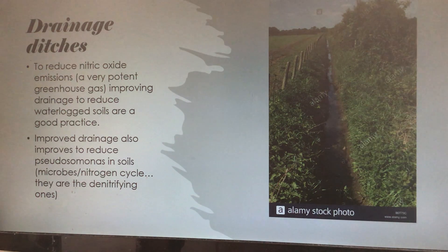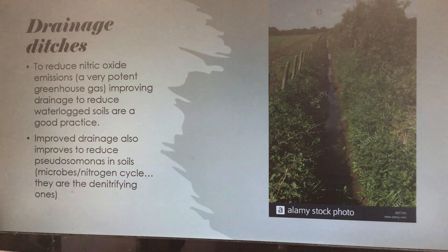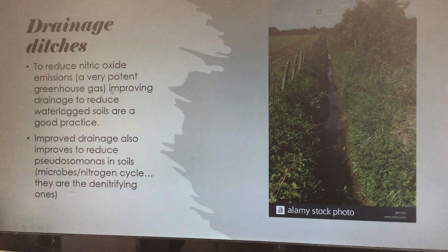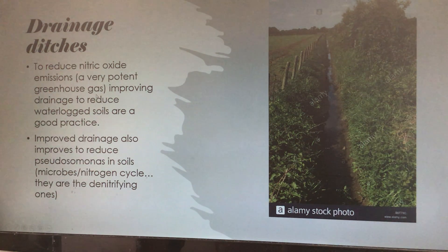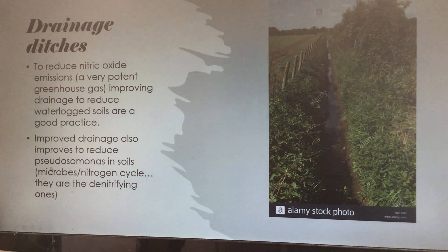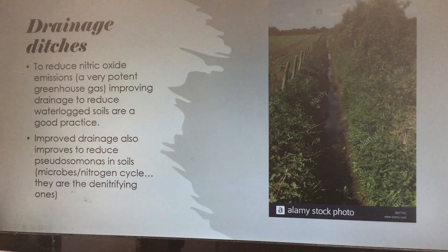Drainage ditches have a double effect. On one side, nitrogen oxides being emitted from waterlogged stagnant soil are very potent greenhouse gases — something like 96 times more potent than carbon dioxide according to the textbook. So reducing that is a good idea — waterlogged soils are a no-go. How do you get rid of it? Just drain it to the side; a bit of gravity will help. The other nice side effect is that if it's less waterlogged, you'll have fewer Pseudomonas and other anaerobes that are actually denitrifying the soil.